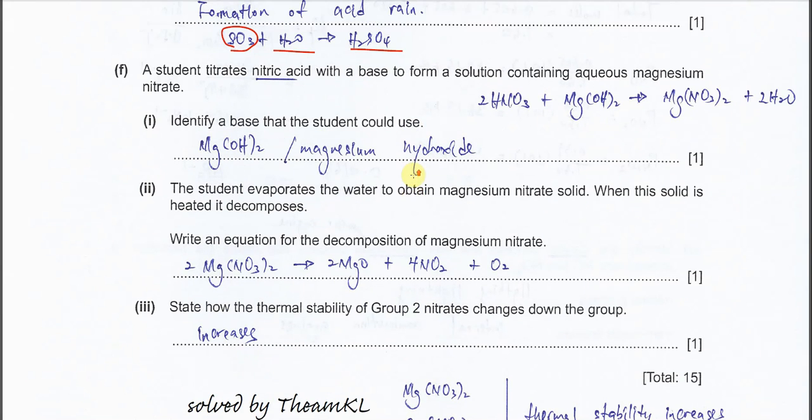Part F. A student titrates nitric acid with a base to form a solution containing aqueous magnesium nitrate. Part one: identify a base that the student could use. This is straightforward because it's a base and must involve magnesium. We must use magnesium hydroxide. Magnesium hydroxide can undergo neutralization with HNO3 and form the salt, magnesium nitrate, with water. You can give the formula or the name.